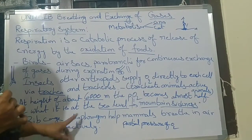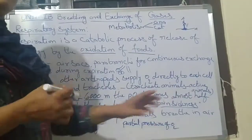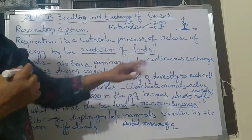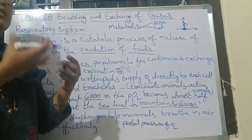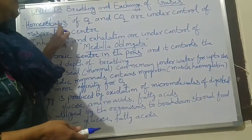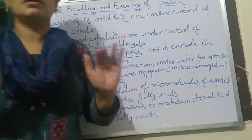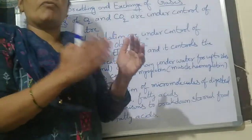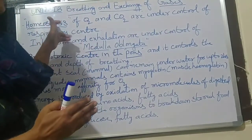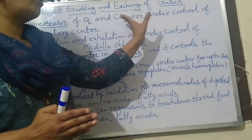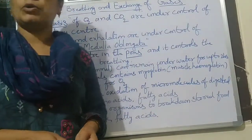In mammals, mainly the ribcage and diaphragm help to breathe in air more effectively. The ribcage contains the lungs, and the lungs and diaphragm help to maintain homeostasis — meaning maintaining equal levels of oxygen and carbon dioxide. This homeostasis of oxygen and carbon dioxide is under the control of the respiratory center.